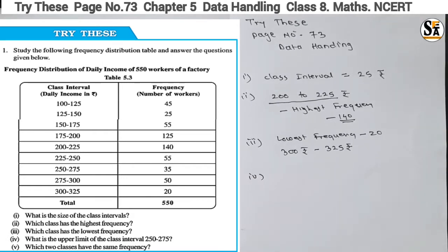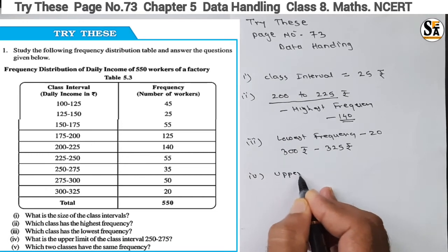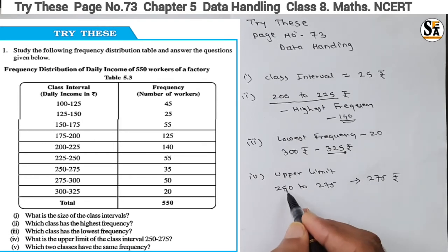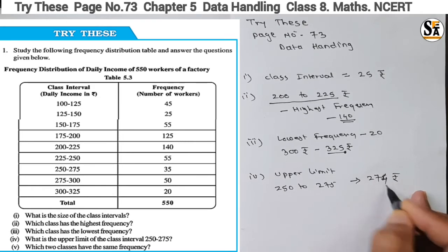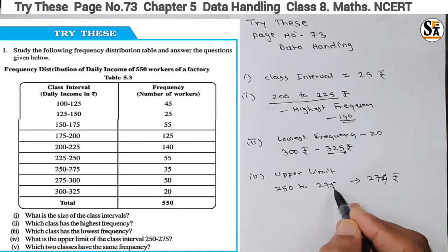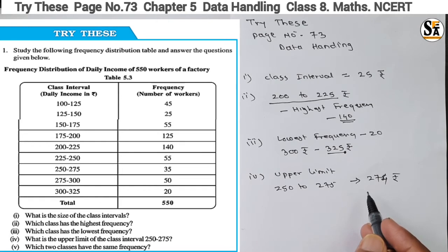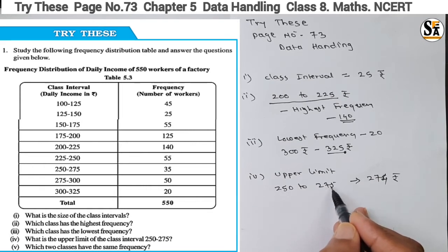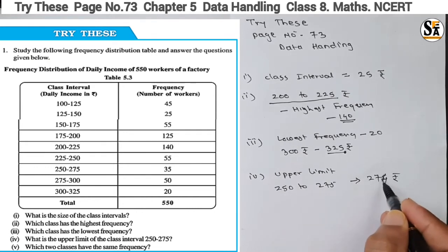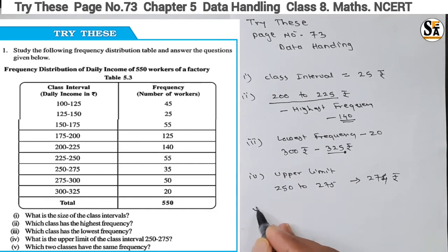The fourth question asks: what is the upper limit of the class interval 250 to 275? The upper limit will be 274, because if a worker has a pay of 275 it will fall in the next group — 275 to 300. This is the rule. So the upper limit for 250 to 275 is 274 rupees.